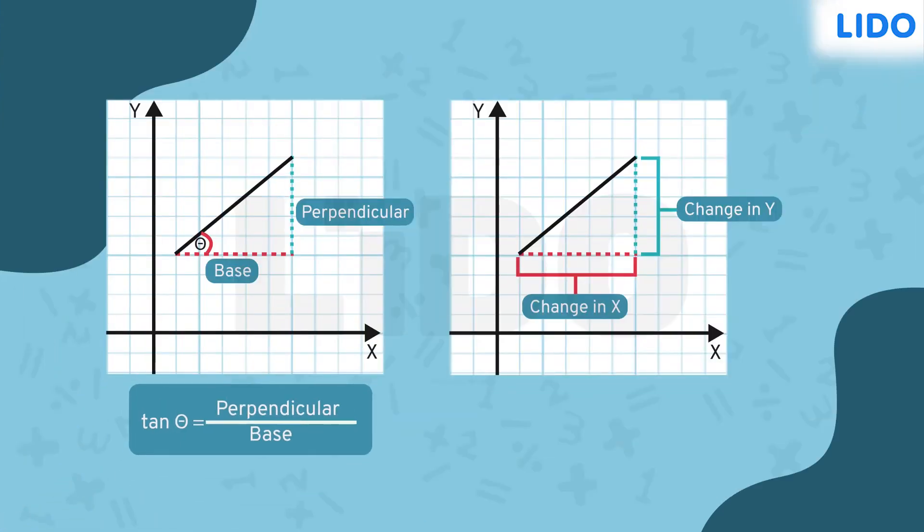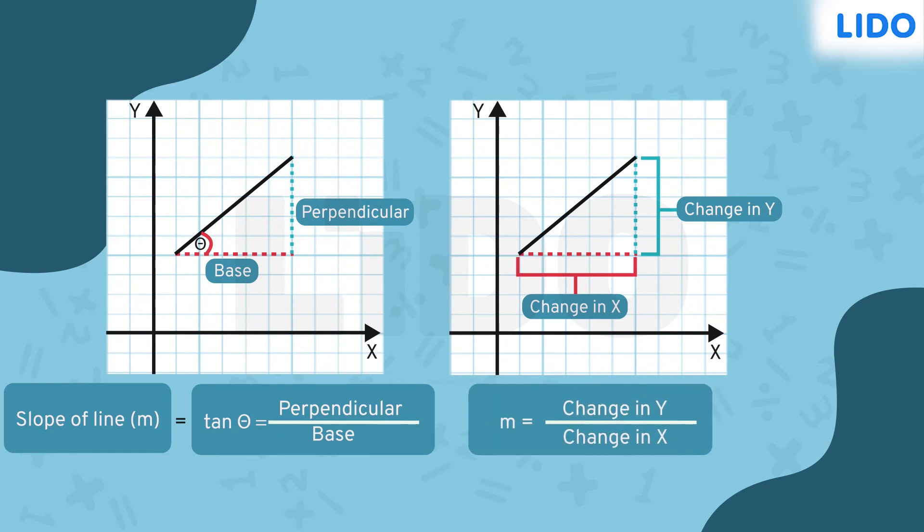We know that tan theta is given by perpendicular over base. In the triangle, the perpendicular side represents vertical shift which is the change in y-coordinates. Similarly, the base side represents horizontal shift which is the change in x-coordinates. Thus, slope of a line which is tan theta, the ratio of perpendicular to the base, becomes the ratio of change in y-coordinate to the change in x-coordinate.